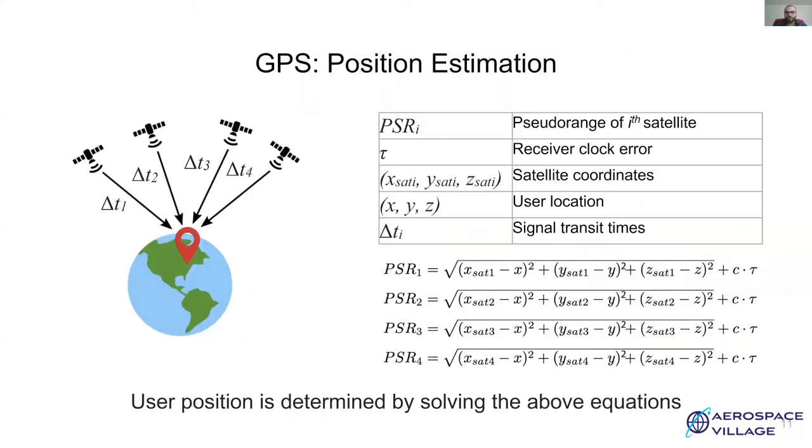GPS position is determined by solving these equations for X, Y, and Z. Pseudoranges determined using the common reception technique are key in location determination. Given the speed of light, a delay of one nanosecond can lead to errors of up to 30 centimeters.